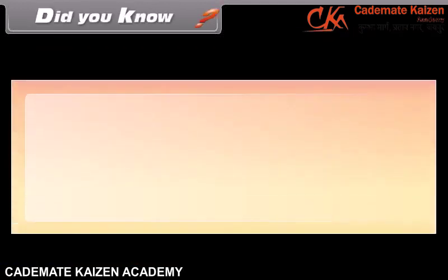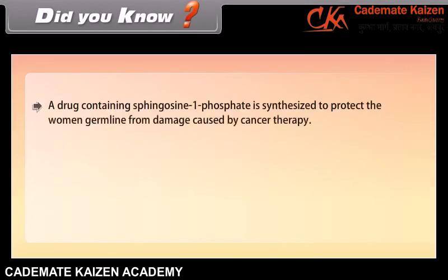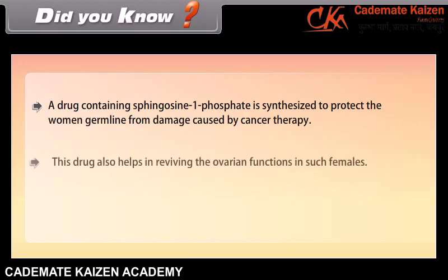Did you know? A drug containing sphingosine-1-phosphate is synthesized to protect the female germline from damage caused by cancer therapy. This drug also helps in reviving ovarian functions in such females.